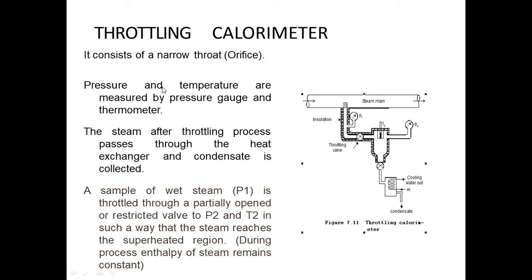This throttling process is used to measure the dryness fraction, and the apparatus used is called the throttling calorimeter. We use the throttling process for measurement of dryness fraction in the throttling calorimeter. Here is a diagram of the calorimeter — there is a steam main, the main pipe through which steam is flowing. From that main pipe, you take a sample of the steam whose dryness fraction you want to measure.